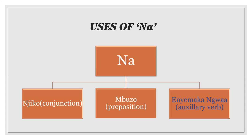Na has three uses in the Evo language. The first one is what we call Njiko, which is conjunction. Na can also be used as Mbuzo, which is a preposition. As well, it can be used as Enyemaka Mbuwa, which is an auxiliary verb — which is the part we're going to cover in this lesson.